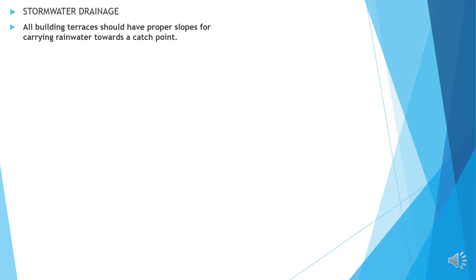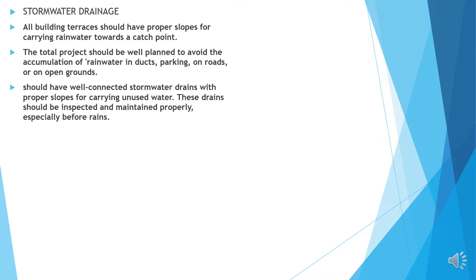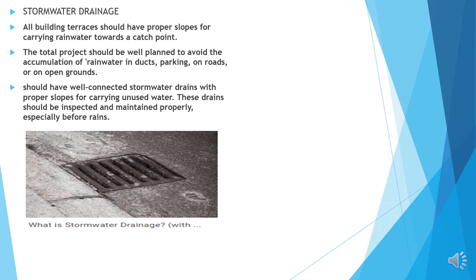Storm water drainage: all building terraces should have proper slopes for carrying rainwater towards a catch point. The total project should be well planned to avoid accumulation of rainwater in ducts, parking areas, on roads or in open grounds. Should have well connected storm water drains with proper slopes for carrying unused water. These drains should be inspected and maintained properly, especially before rains. This is the storm water drain with proper coverage.